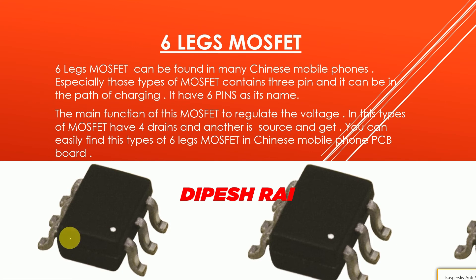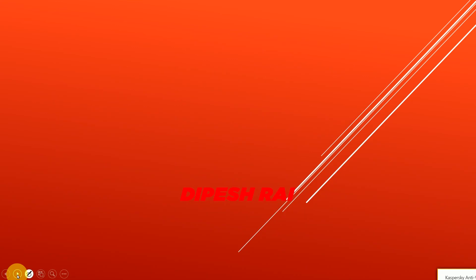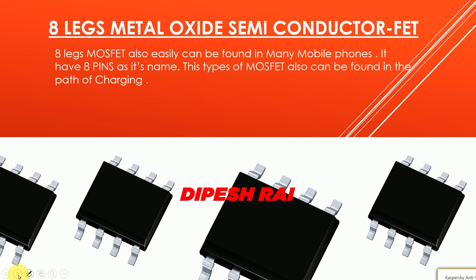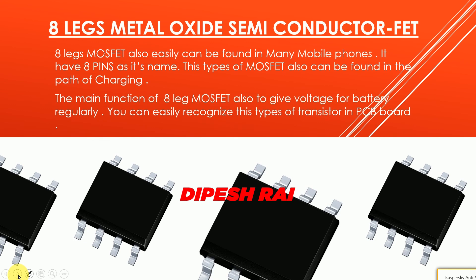Now we are going to discuss the 8-leg metal oxide semiconductor MOSFET. As you can see, it has eight pins. You can easily find the 8-leg MOSFET inside your mobile phone PCB board. It can be found in many mobile phones and is typically located in the charging path. Its main function is to keep voltage regulated for the battery.